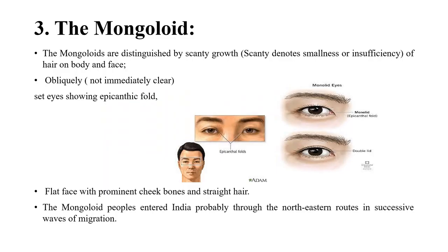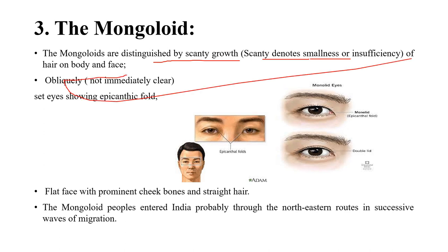Coming to the third classification: Mongoloid. Mongoloids are distinguished by scanty growth — meaning smallness or insufficiency — of hair on body and face. Eyes are obliquely set, showing an epicanthic fold. The epicanthic fold is that small fold of skin visible at the inner corner of the eye.